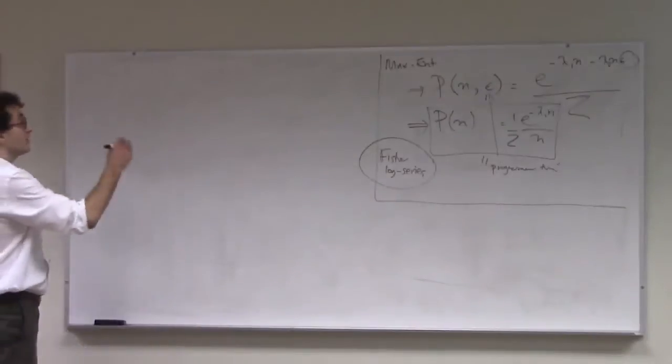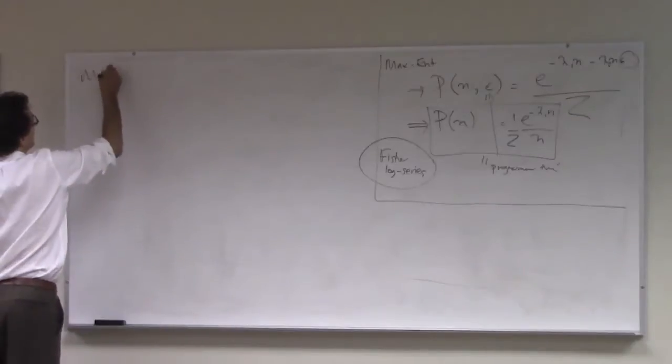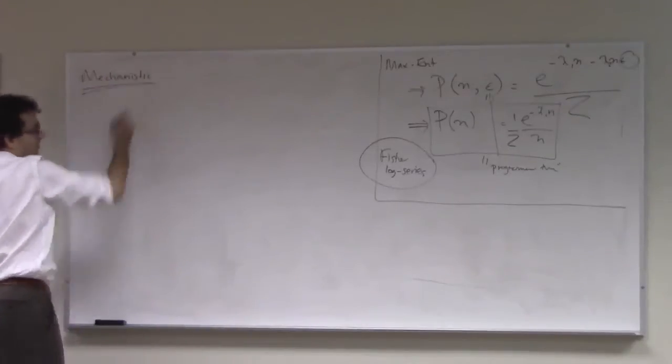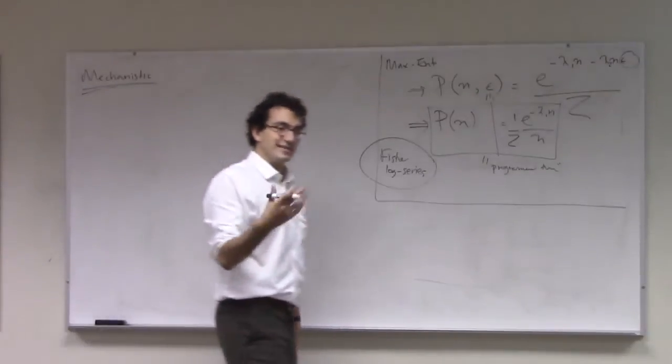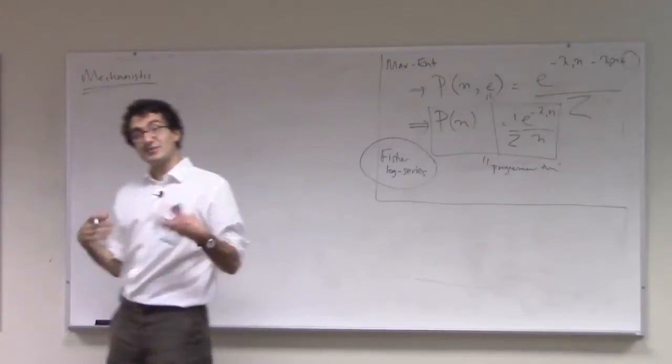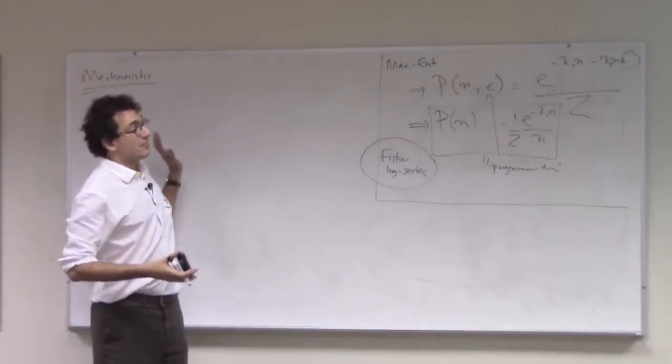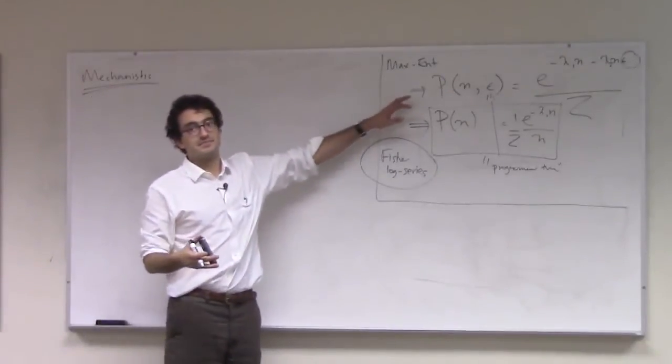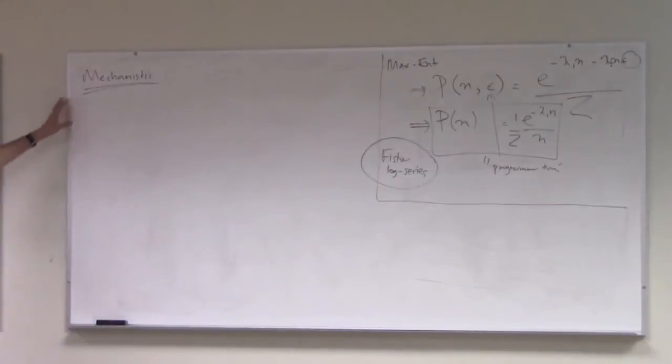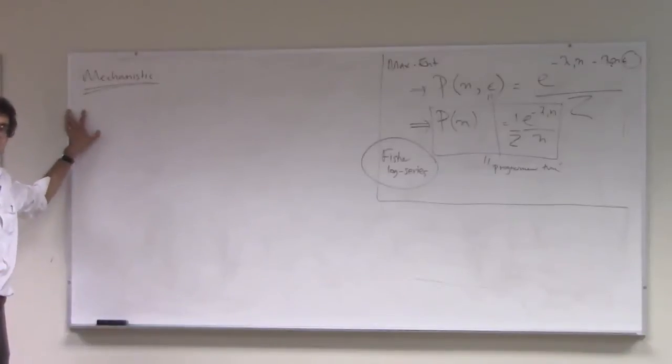We can also build a mechanistic model of programming language popularity. Previously, when we studied the taxicab problem and produced the mechanistic model, we were able to find a very simple one that had the same predictions as the Maxent model did. Here, by contrast, we're going to find the mechanistic model produces similar behavior, but the functional form will actually be slightly distinct.